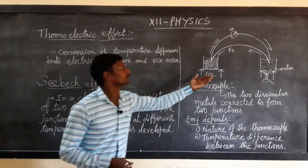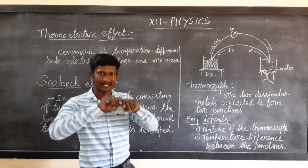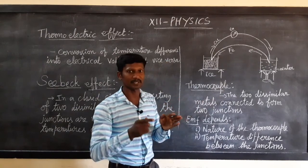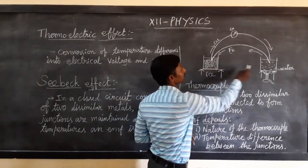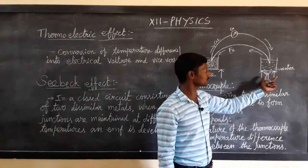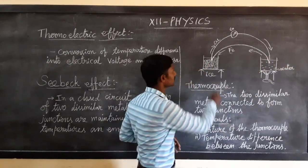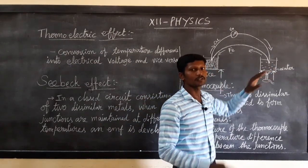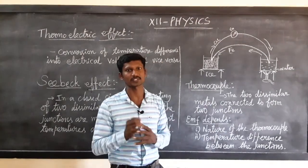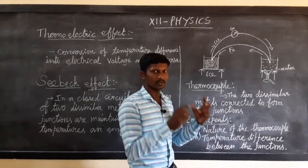A thermocouple consists of two dissimilar metals connected at a junction — for example, iron and copper. At one junction we have cooling, like an ice cube — that is the cold junction. At the other junction we have a burner — that is the hot junction. So there is a low temperature here and a high temperature there. The temperature difference causes an EMF to develop. EMF means electromotive force — thermal energy is converted into electrical energy, and the electrons experience pressure.